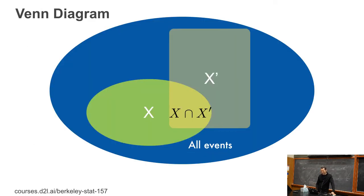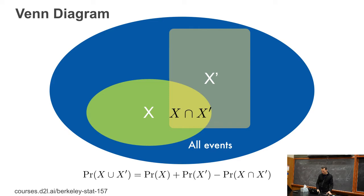Here's the old mandatory Venn diagram. If I have two events, the probability of both things happening is the intersection. It's all straightforward. The probability of the union is the probability of one plus the probability of the other minus the probability of the intersection. This is all fairly nice sets and measures — you could take an entire measure theory class and do this for real.